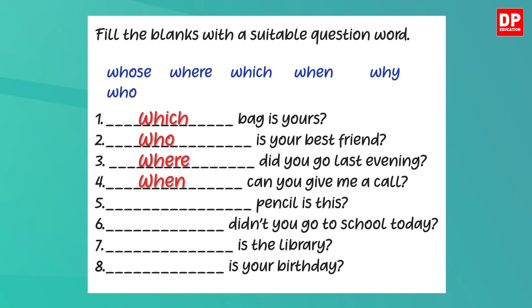The fifth question is: blank pencil is this. Here you want to find the owner of the pencil. What is the question word? Yes, it's 'whose.' So the answer is: whose pencil is this?